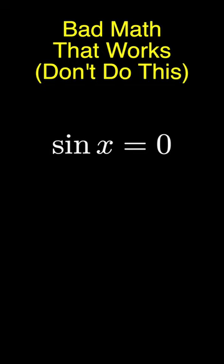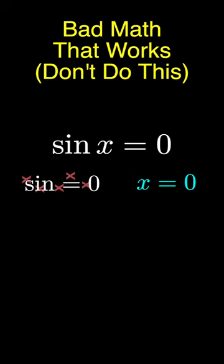Take sin x equals 0. When you have a product of two terms equaling 0, either the first is 0 or the second is 0. So x must be 0 — since sin equals 0 doesn't make sense on its own, x is 0. Which would happen to be correct on a restricted interval.